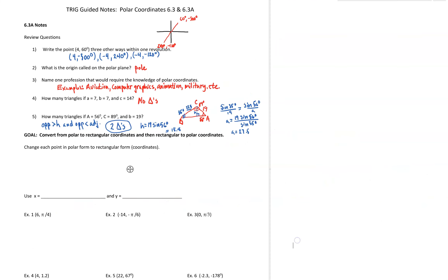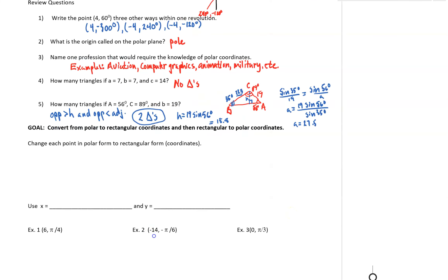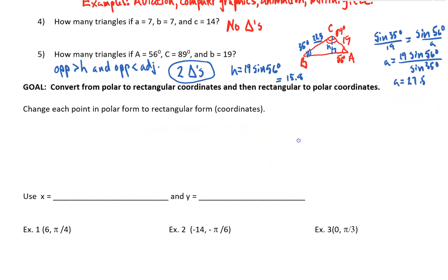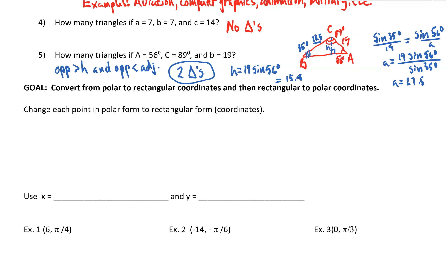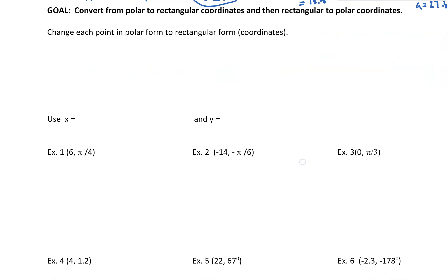Talking about today: the continuation of polar coordinates in terms of conversions. Our goal today is to be converting polar to rectangular and rectangular to polar coordinates. Yesterday, we talked about this right at the end of our lesson — that X is really R cosine theta, and Y is really R sine theta.